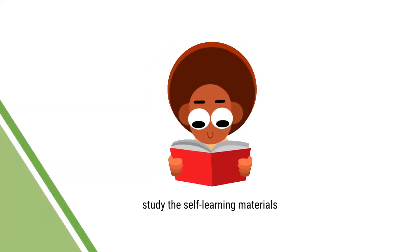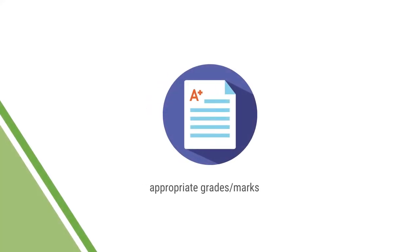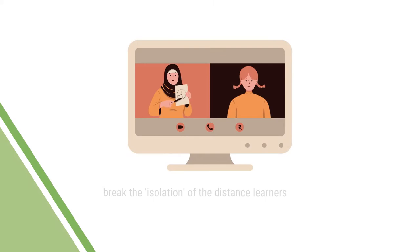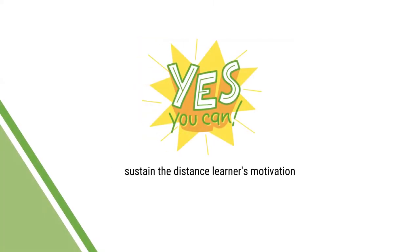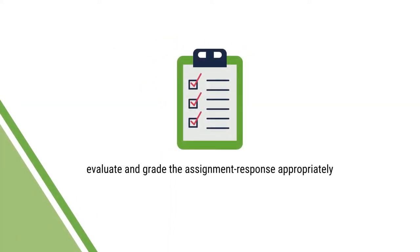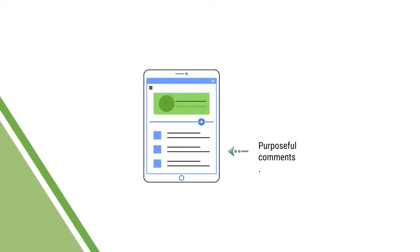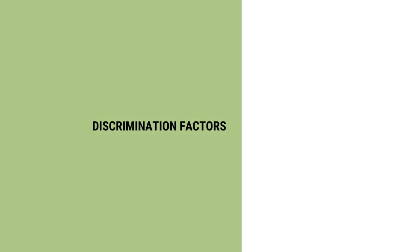A distance teacher should thoroughly go through the self-learning materials before taking up the responsibility of evaluating the assignment responses. The distance teacher should compensate for the weaknesses in the lessons, units, and the assignments with appropriate grades and marks. Should try to break the isolation of the distance learners, sustain their motivation, evaluate the assignment responses and grade them appropriately. A teacher can do all these things if he or she is aware of the discrimination factors, which help the distance teacher discriminate between a weak response and a good one, a good response and a better one when they are favorable. They affect the judgment of the assessors when they are not favorable.